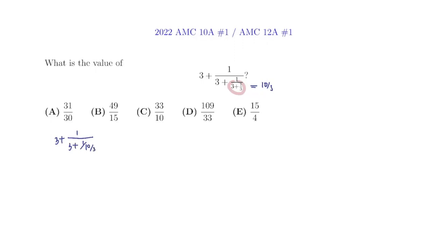1 over 10 thirds is equivalent to 3 tenths, so we have 3 plus 1 over 3 plus 3 tenths. 3 plus 3 tenths is equivalent to 3 times 10, which is 30. 30 plus 3 is 33, so that gives us 33 over 10.